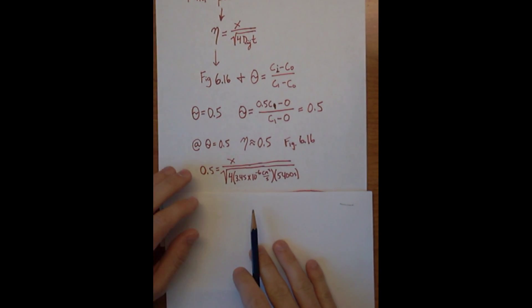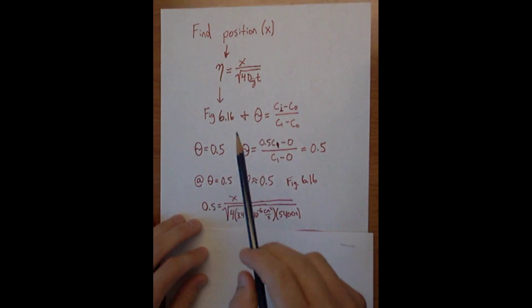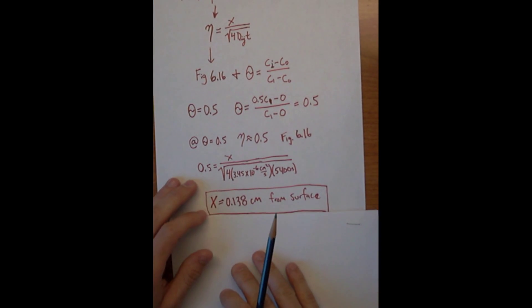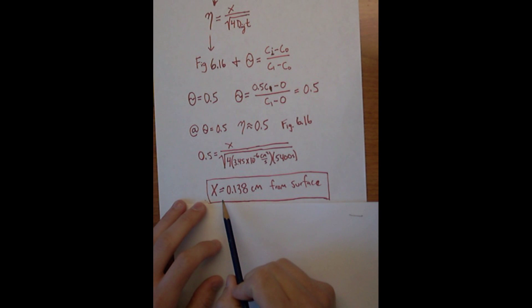So then just plugging it in, eta equals 0.5, we're using this equation right here. We can then figure out and solve what X is, and it looks like the concentration is 50% of the bath concentration at 0.138 centimeters from the surface.